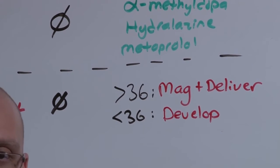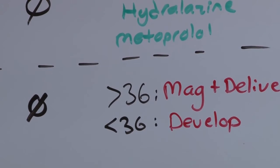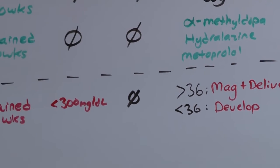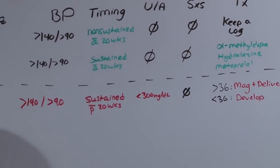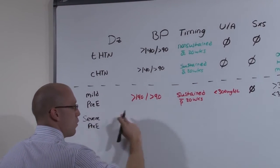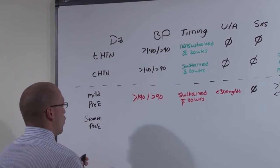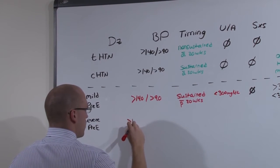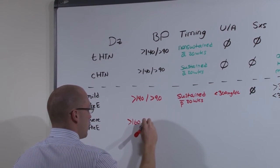And what are those clinical signs of worsening? Severe pree is going to see a worsening of all of the conditions. You're going to see a worsening of the blood pressure, greater than 160 or greater than 110.